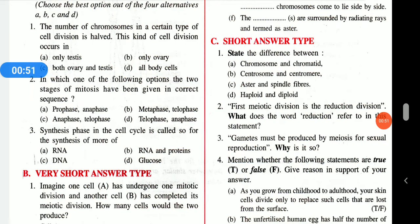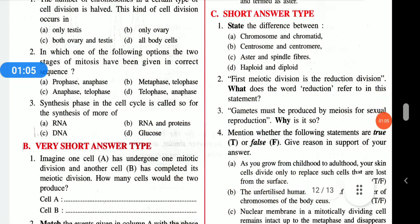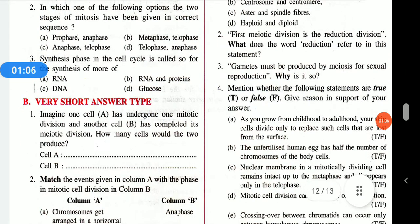The next question: what is the synthesis phase in the cell cycle called? There are three phases — G1 phase, S phase, and G2 phase. DNA synthesis occurs during the S phase, so the correct answer is part C.